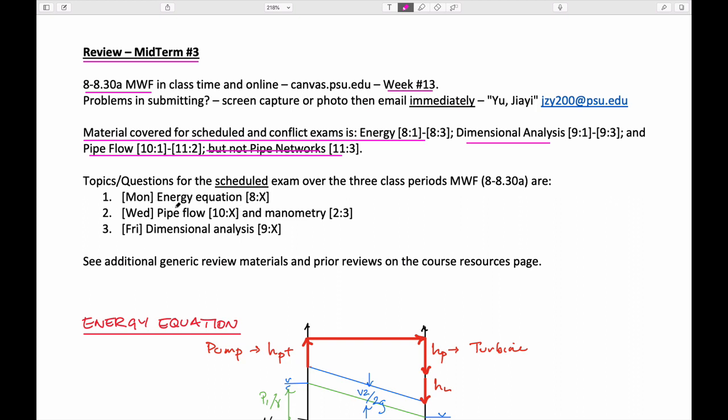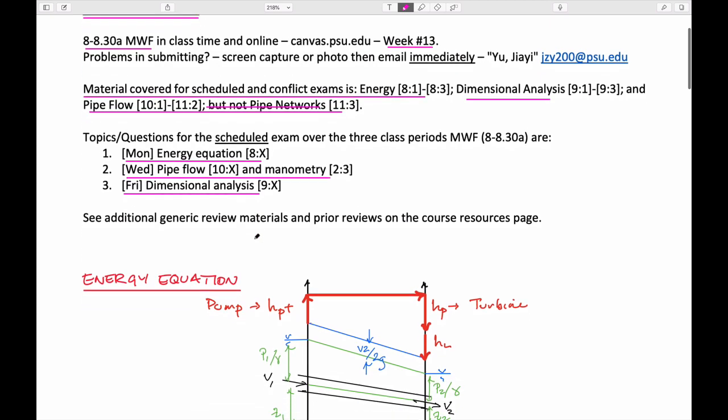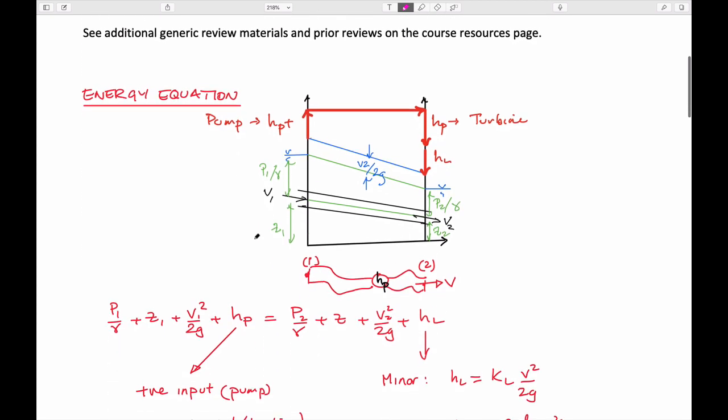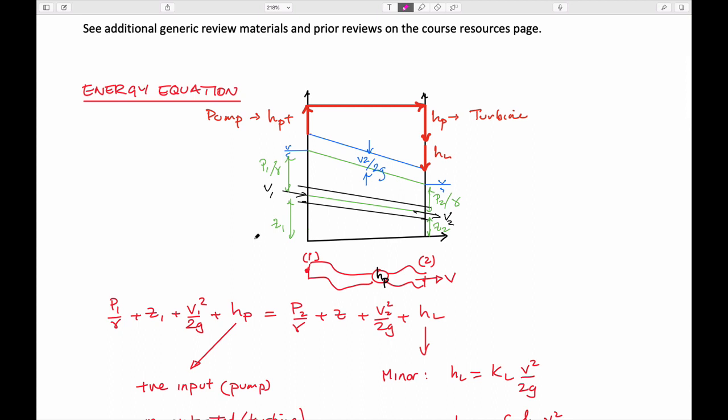There are three questions. The Monday question is on the energy equation from week 8. The Wednesday question is on pipe flow with also a reference to manometry from week 2 and the Friday question is on dimensional analysis. Those are the topical areas for the scheduled exam. The conflict exam would potentially be on something different in terms of specifics.